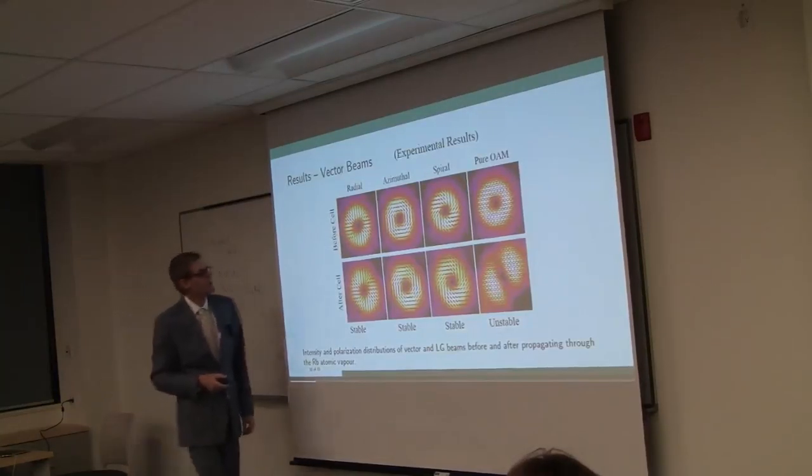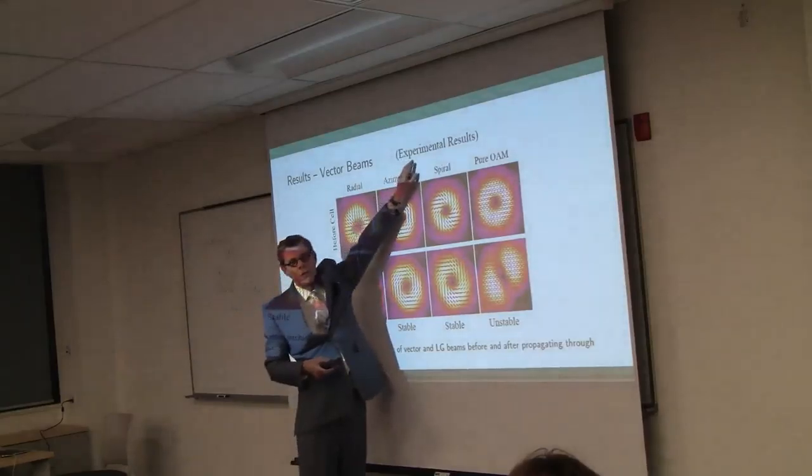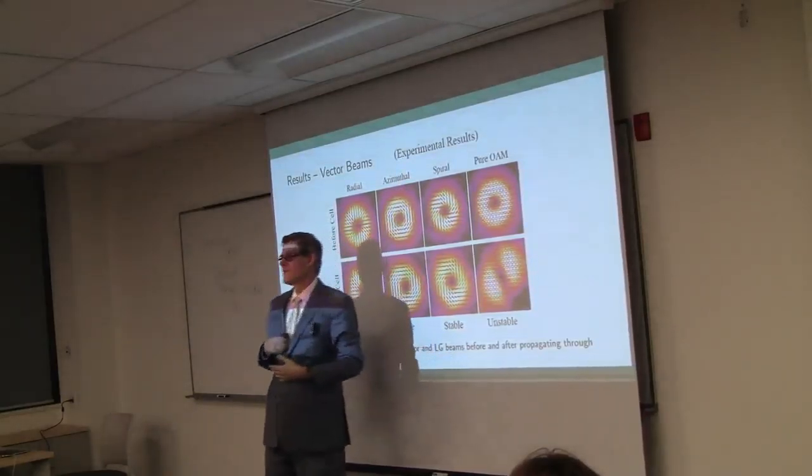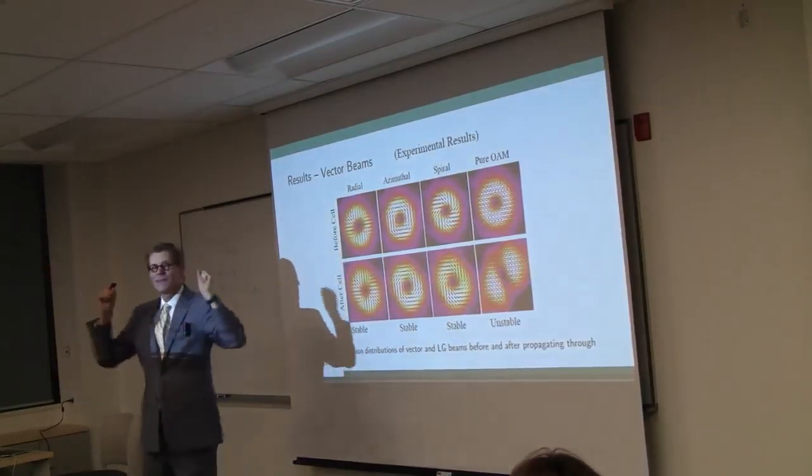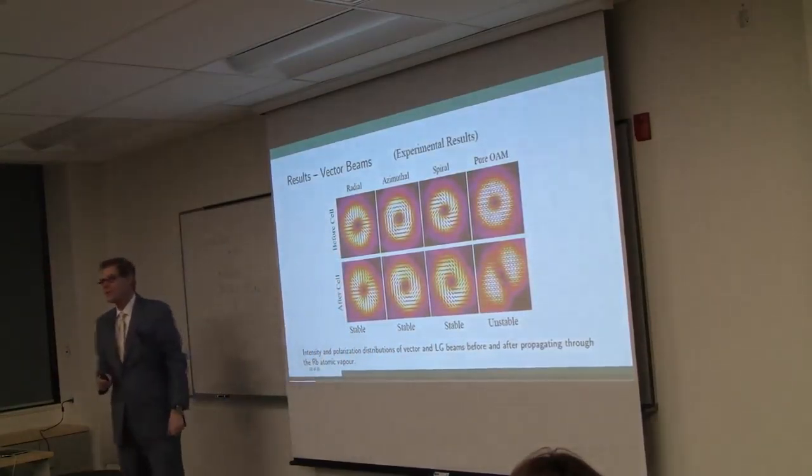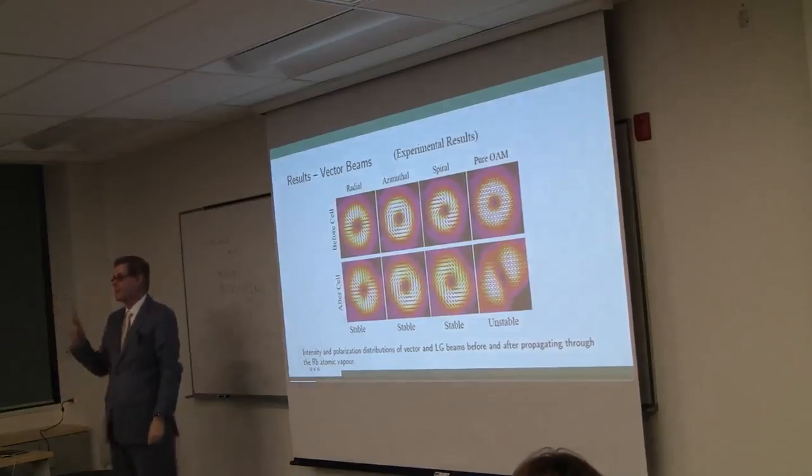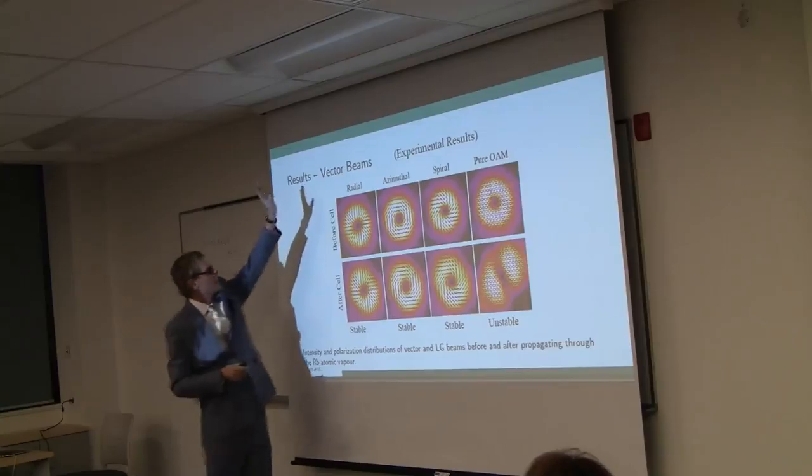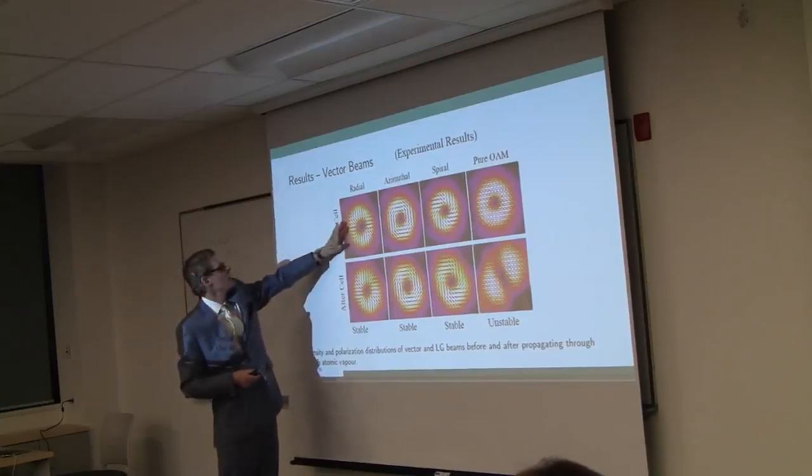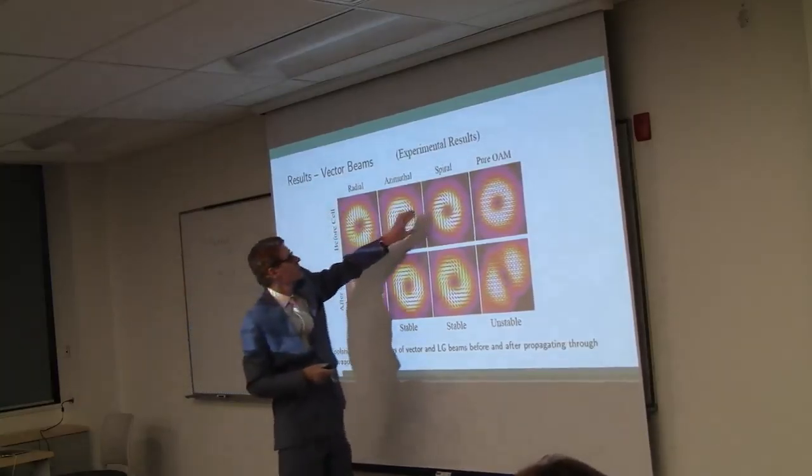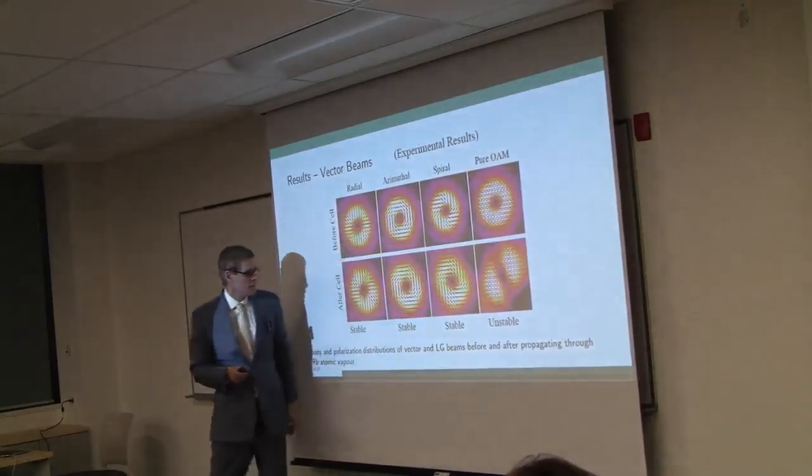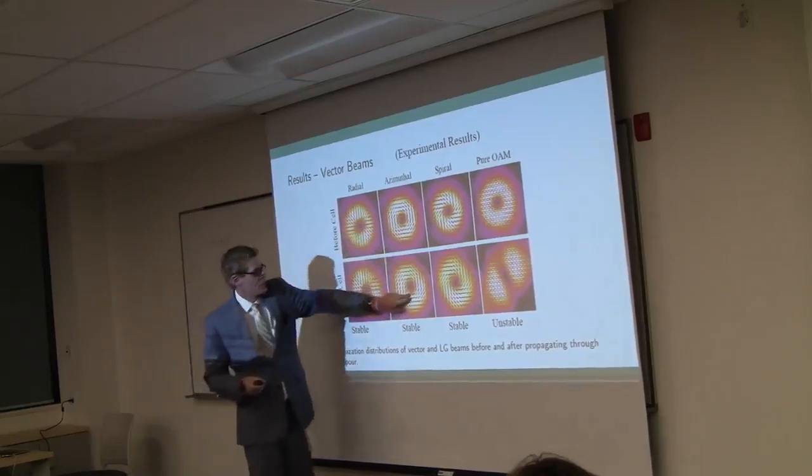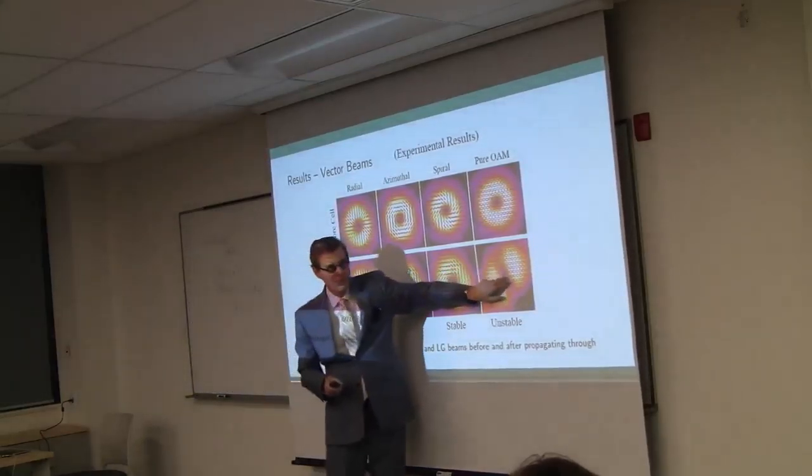And this is what you end up with. And just this morning, I added the words experimental results. Well, they did the work, not me. This data is so beautiful that you would think that this was theory if I didn't tell you that these were laboratory results. So, for the input, you can have radial, azimuthal, spiral, or the pure OAM. You look at the output of the cell, pretty much the same, pretty much the same, pretty much the same, different.